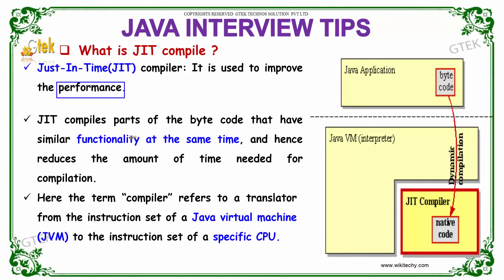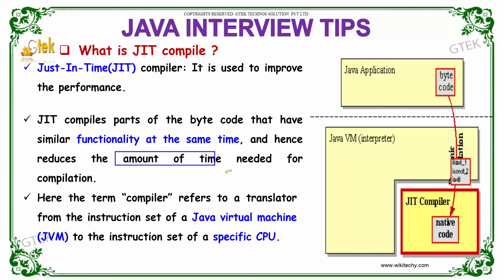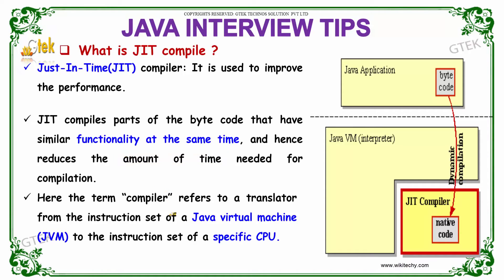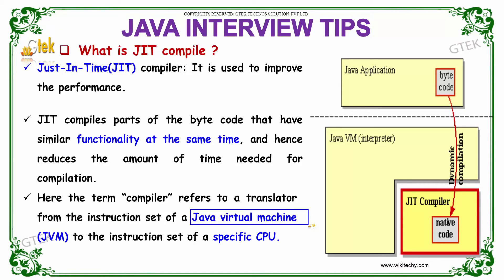JIT compiles the parts of the bytecode that have similar functionality at the same time, and hence it reduces the amount of time needed for compilation. The term compiler here refers to a translator from the instruction set of the Java Virtual Machine, that is the JVM, to the instruction set of a specific CPU.